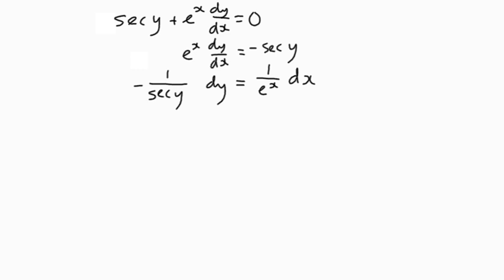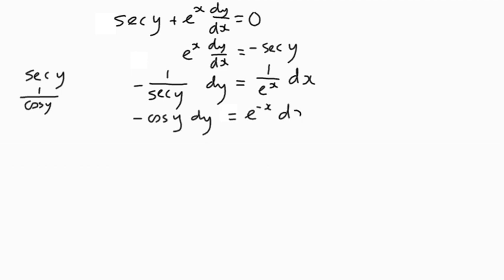We don't have to leave it like that — we're going to integrate it in a moment. But remember, sec y is 1 over cos y, so 1 over sec y is just cos y. So we've got negative cos y dy on the left, and I'm going to make the x term a negative index for integrating purposes.